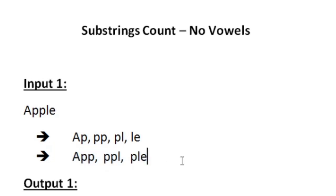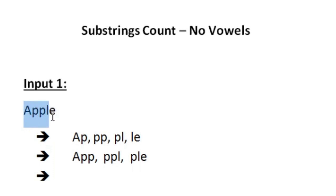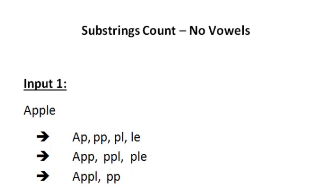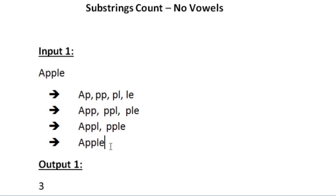Now let us generate the substrings of length 4. The first substring is 'appl' and then 'pple'. After this we can't generate a substring of length 4, and the last is the string itself 'apple'. These are all the substrings of length greater than or equal to 2 for the string 'apple'.